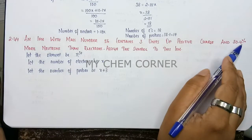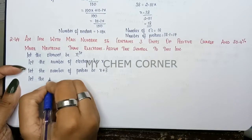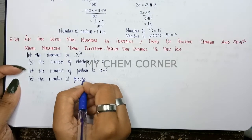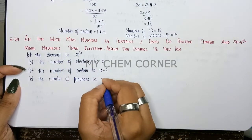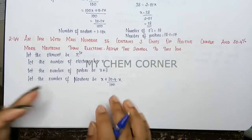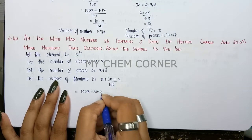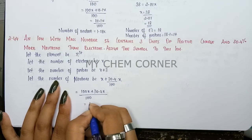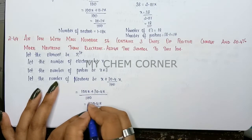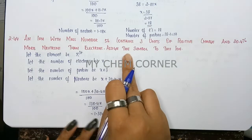Now for neutrons: it says 30.4 percent more neutrons than electrons. So the number of neutrons equals x plus 30.4 divided by 100 into x, which gives us (100x + 30.4x) divided by 100, equal to 130.4x divided by 100, which is 1.304x. So 1.304x is going to be the number of neutrons.